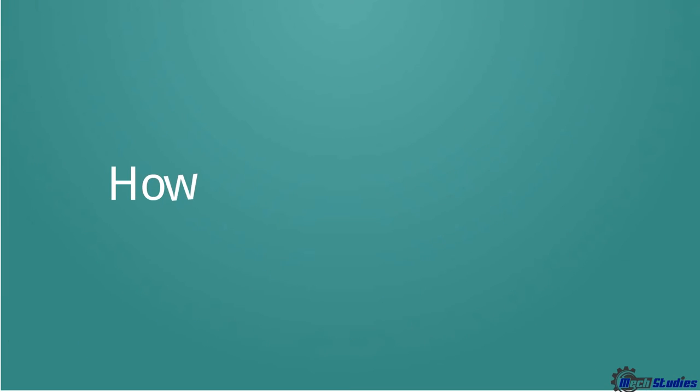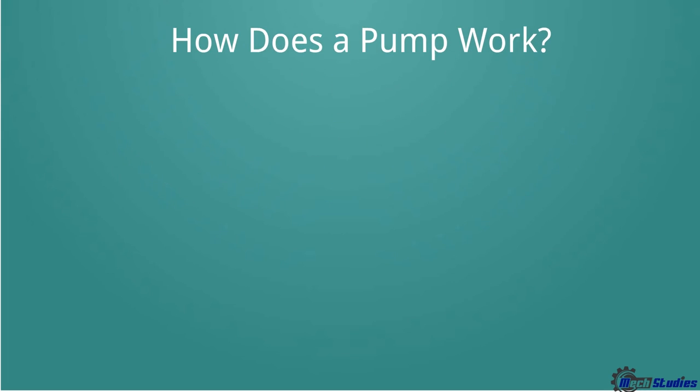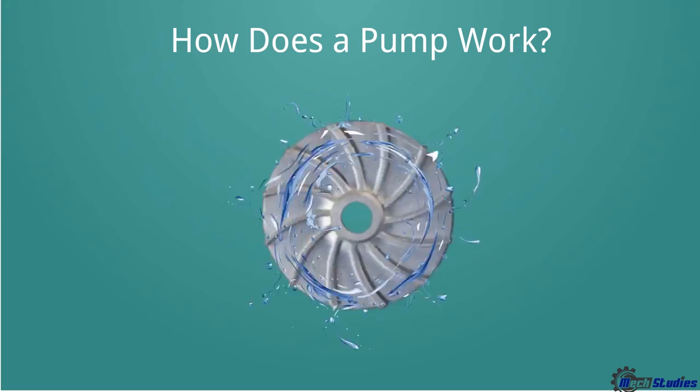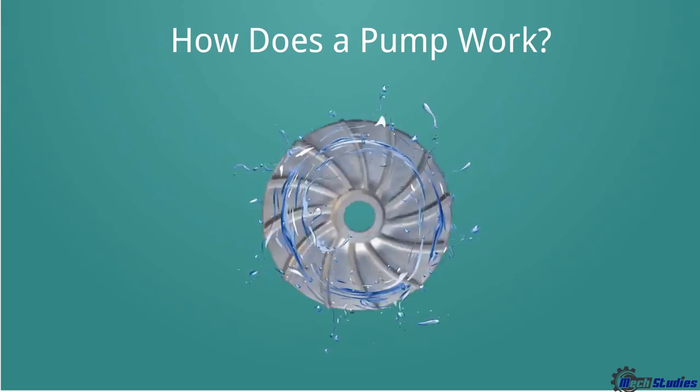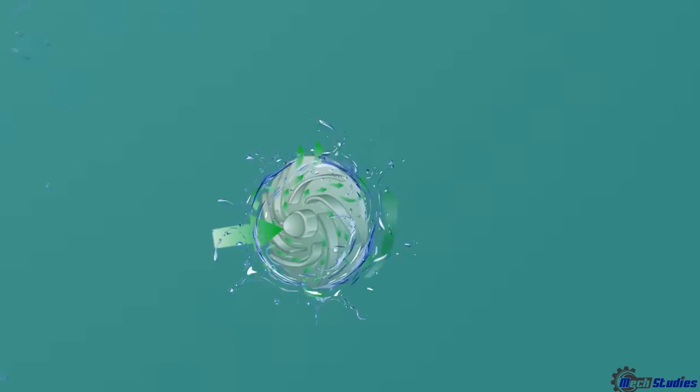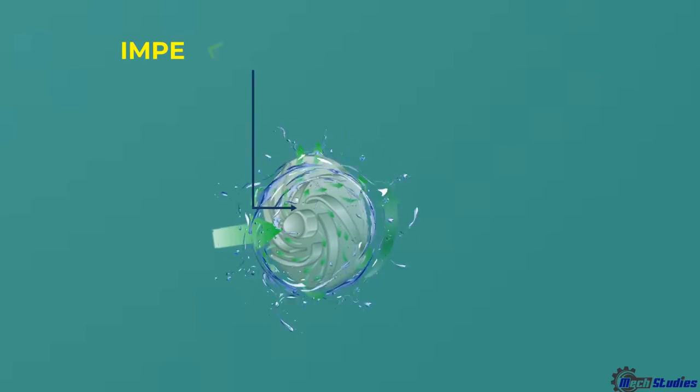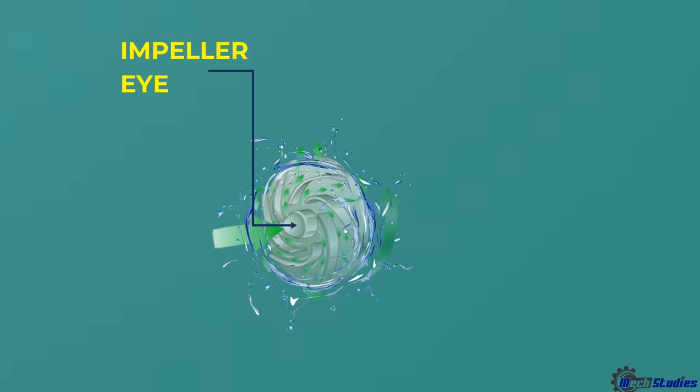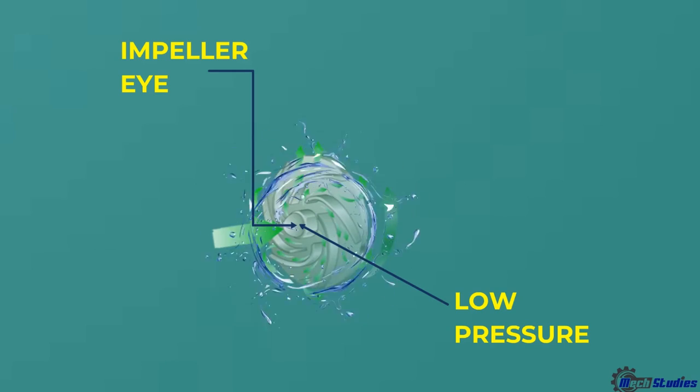Let's see how does a pump work, or how is the water introduced into the pump? Basically, we will learn the working principle of a pump. See, the impeller is rotating and associated water is also rotating with the impeller. This is the impeller eye, which means the center of the impeller. As the impeller rotates, due to its impeller design, low pressure will be created at the impeller eye.